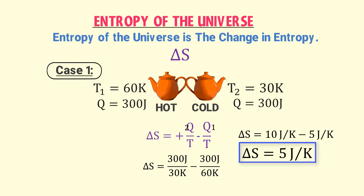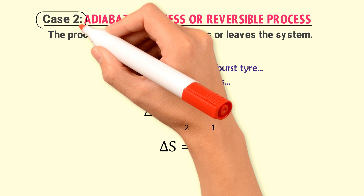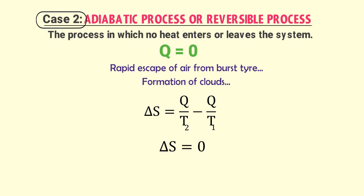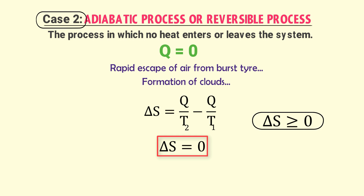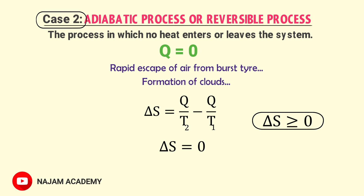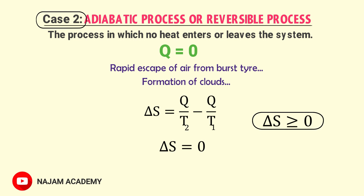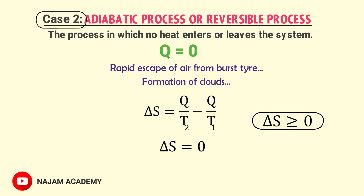Thus in an adiabatic or reversible process, the change in entropy is zero — entropy of the universe is constant. In case one, entropy of the universe is always positive; in case two, it is always zero or constant. Therefore, entropy of the universe ΔS is always greater than or equal to zero. At system level, entropy may be negative or positive depending upon the heat transfer. If you learned something new, please like this video and subscribe for more conceptual lectures. Thank you for watching.